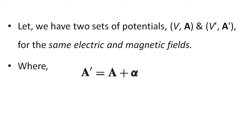Where A' is equal to A plus alpha — that is, A' and A differ by alpha. And V' is equal to V plus beta — that is, V' and V differ by beta.